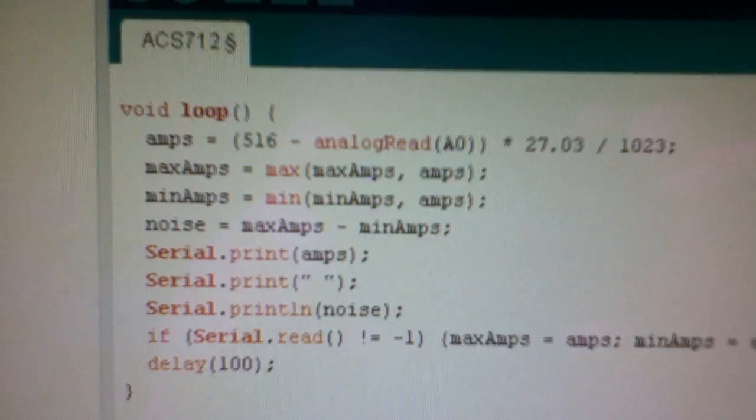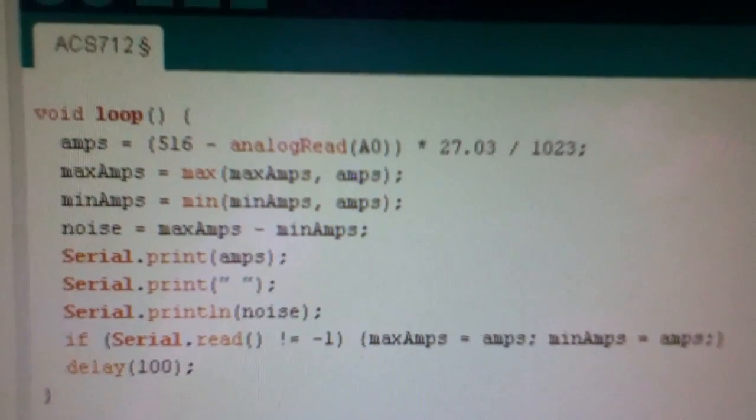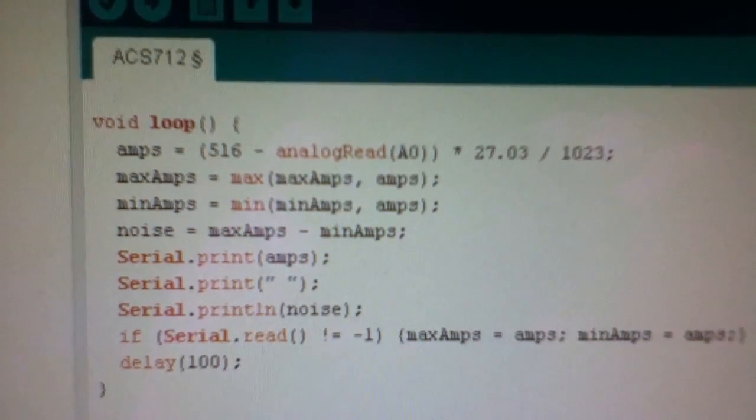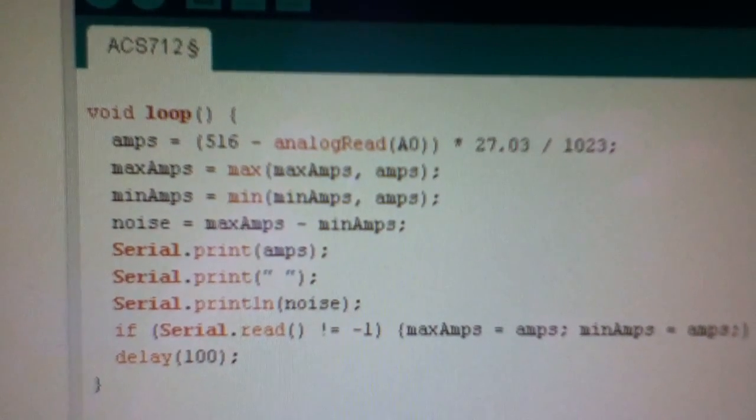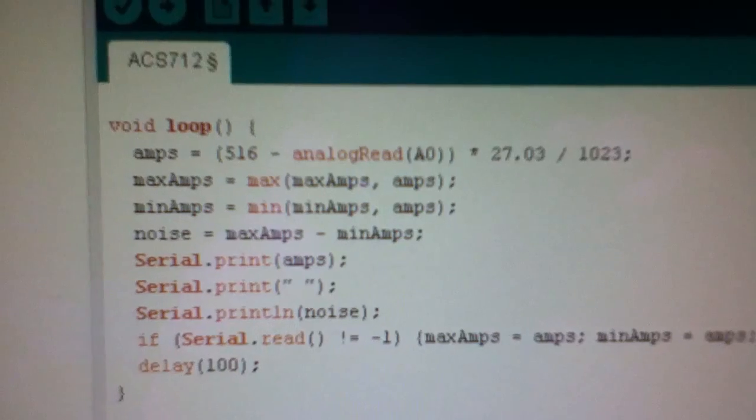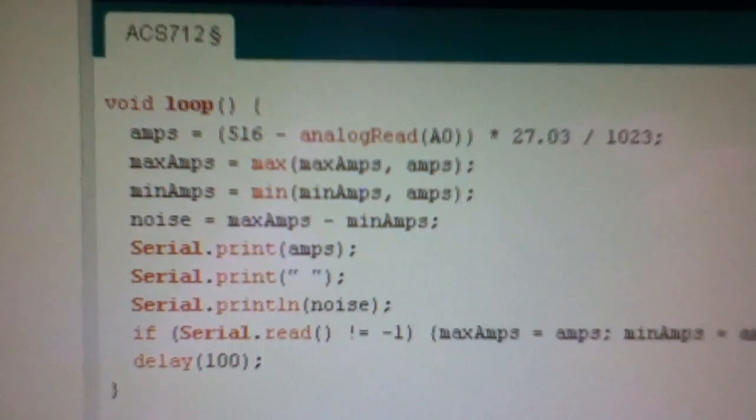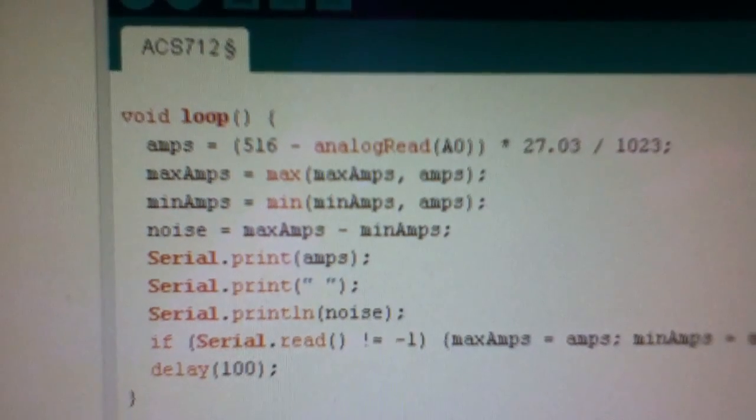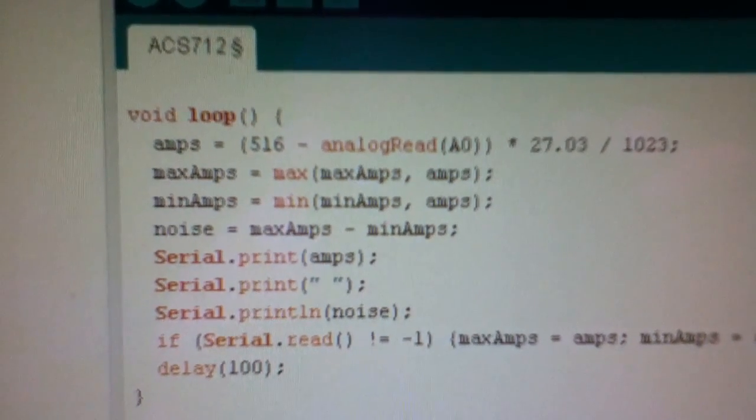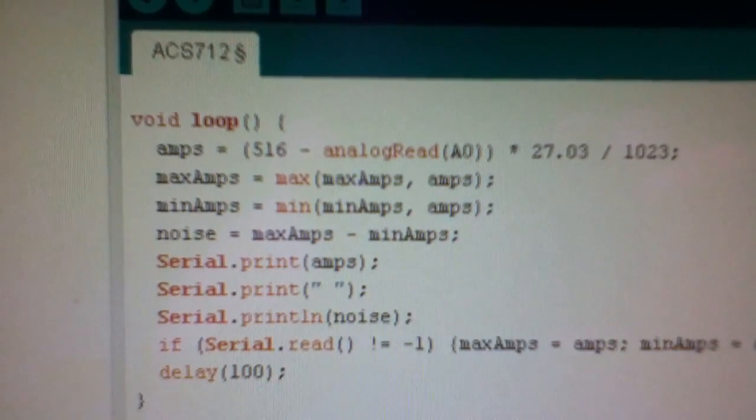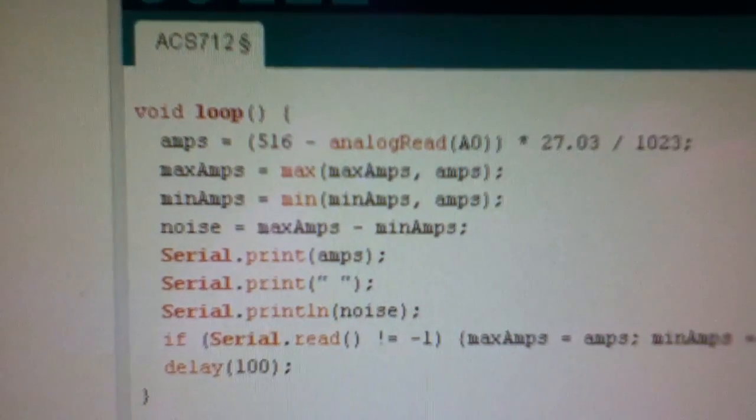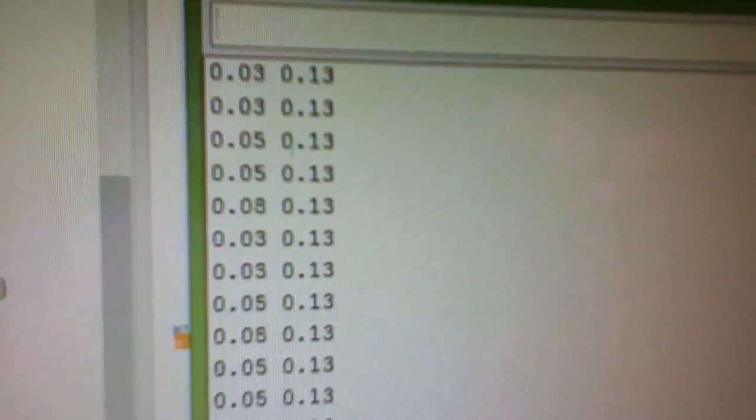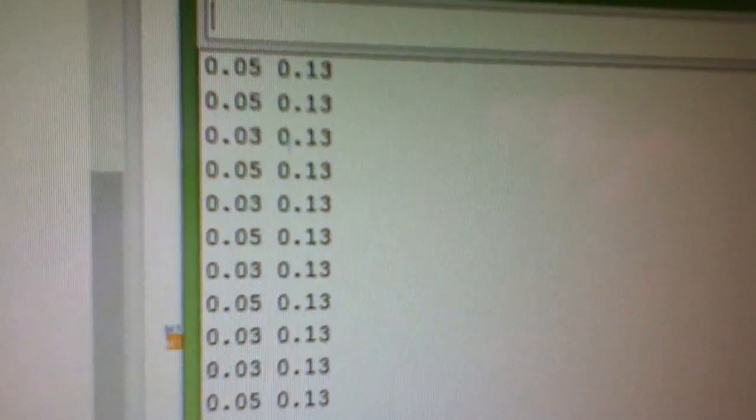The first line: amps equals 516 minus analog read times 27.03 divided by 1023. 27.03 amps is the full scale deflection on the current sensor and 1023 is the number of analog to digital steps. The new lines I've added are: max amps is the maximum of max amps and current amps, min amps is the minimum of min amps and current amps, and noise is one minus the other.